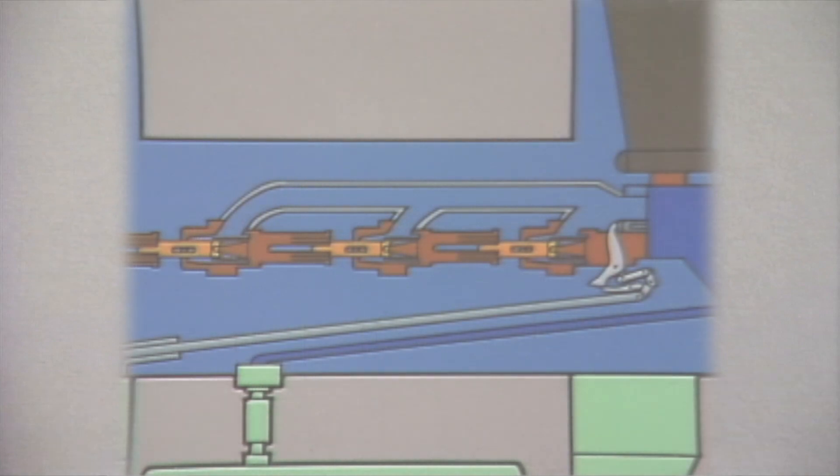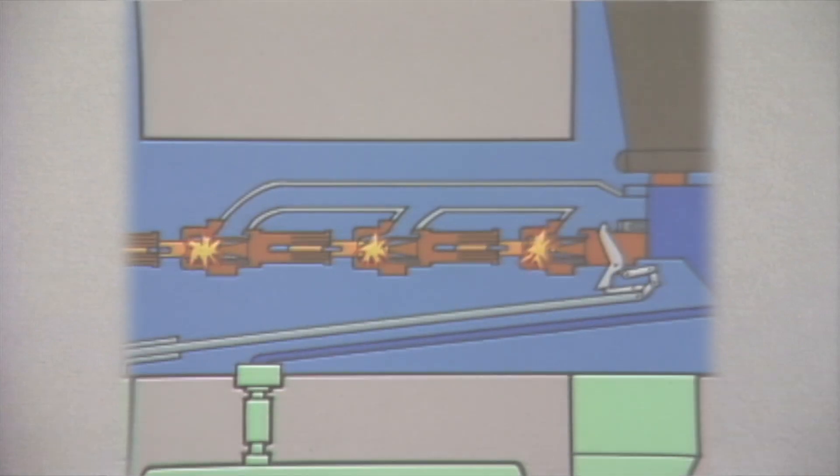When the breaker trips, the contacts separate and arcs form. At the same time that the contacts separate, the blast valve opens. This allows high pressure gas to blast through the blast tubes and through the arcs, blowing out the arcs.